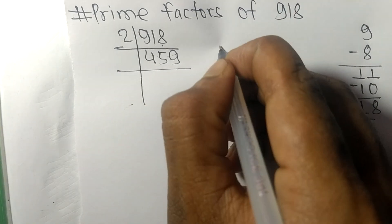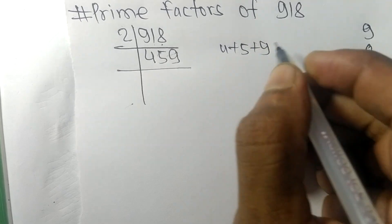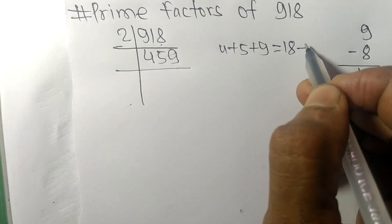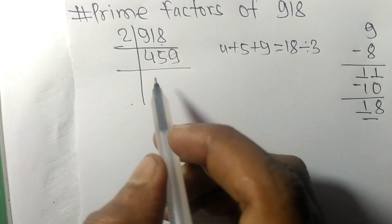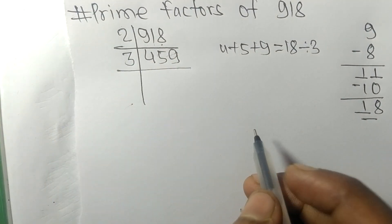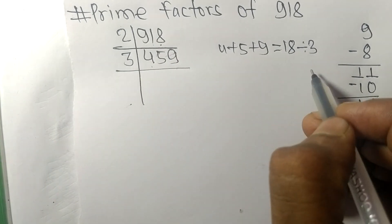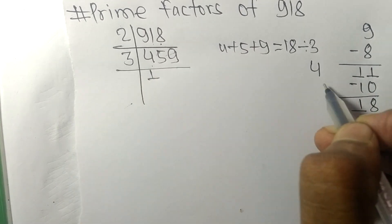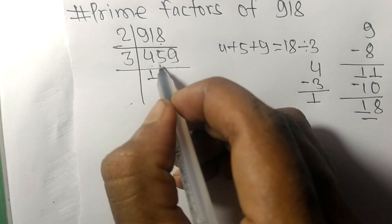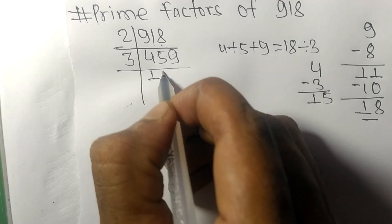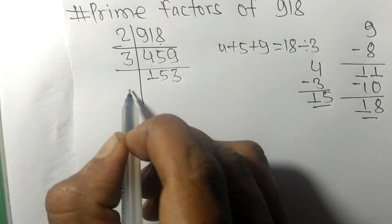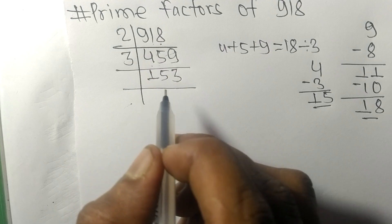When we add the digits of 459 — that is 4 plus 5 plus 9 — we get 18, and 18 is exactly divisible by 3, so 459 is also divisible by 3. Dividing: 3 times 1 is 3, subtract from 4 to get 1; bring down 5 to get 15; 3 times 5 is 15. So now we get 153.